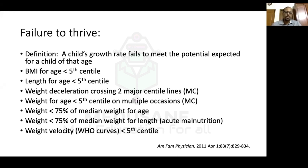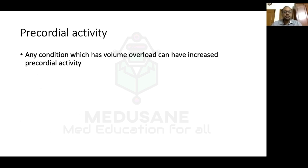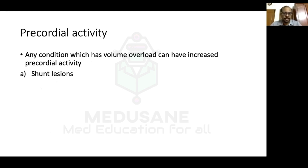There are many criteria for defining failure to thrive — the more criteria satisfied, the more definite the diagnosis. Increased precordial activity, noted when the mother observes pulsations across the chest, is due to volume overload lesions. Any lesion with volume overload can cause increased precordial activity — examples include shunt lesions like VSD and PDA, or regurgitation lesions like aortic regurgitation or mitral regurgitation.